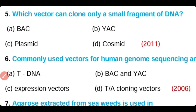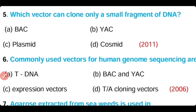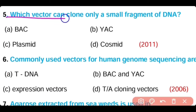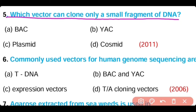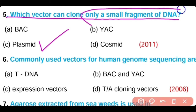Question 5: Which vector can clone only a small fragment of DNA? Options: Bacterial artificial chromosome, yeast artificial chromosome, plasmid, cosmid. Option C is correct. Plasmid is a vector that can clone only a small fragment of DNA.